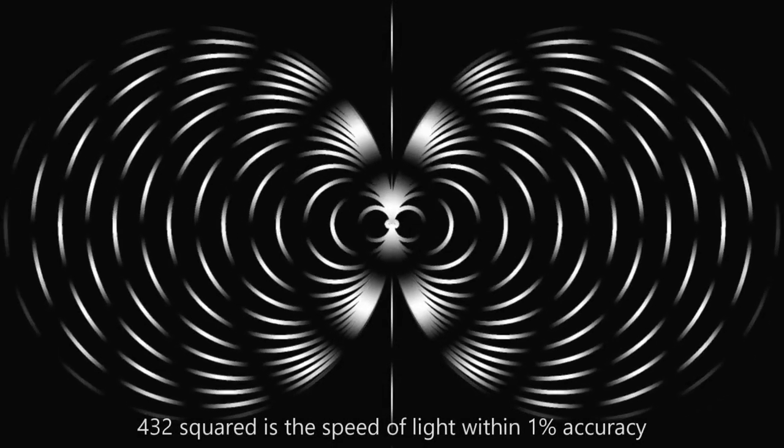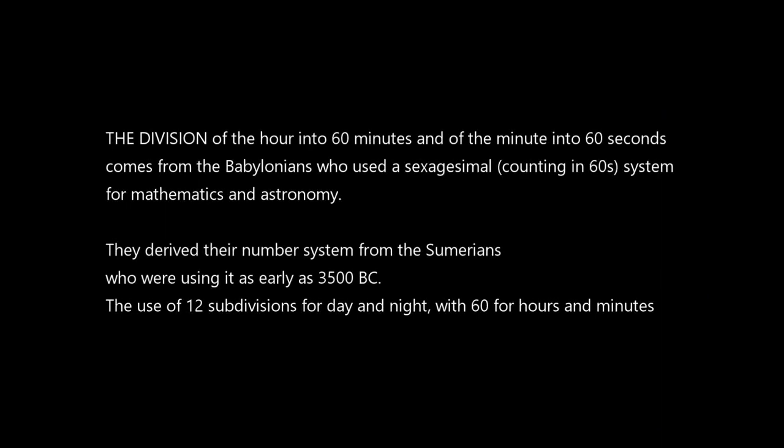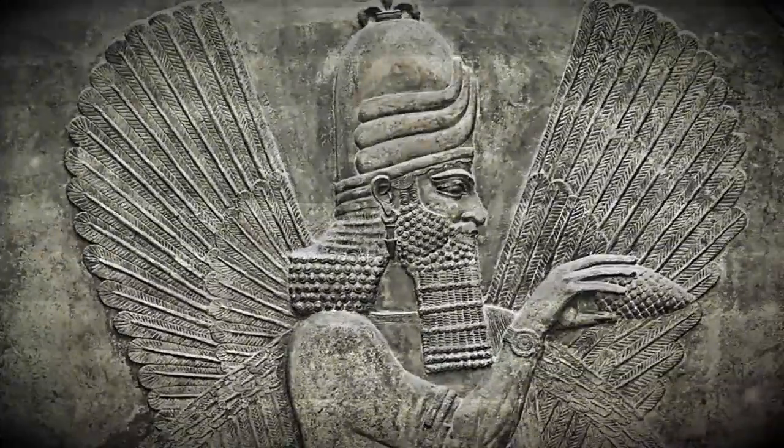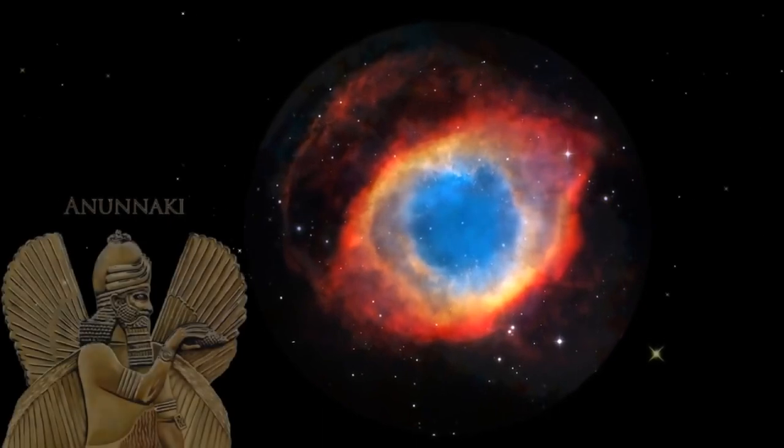432 squared is the speed of light within 1% accuracy. The timekeeping unit, known as the second, did not exist until quite recently in our history. So how could our ancestors know about these harmonies? Here is where the mystery gets really deep. You see, the 60 base mathematical system that led to the creation of the second is not only thousands of years old, it was supposedly gifted to humanity from heavenly visitors who came from the skies. Could the Anunnaki be communicating sacred knowledge through encoded crop circles?